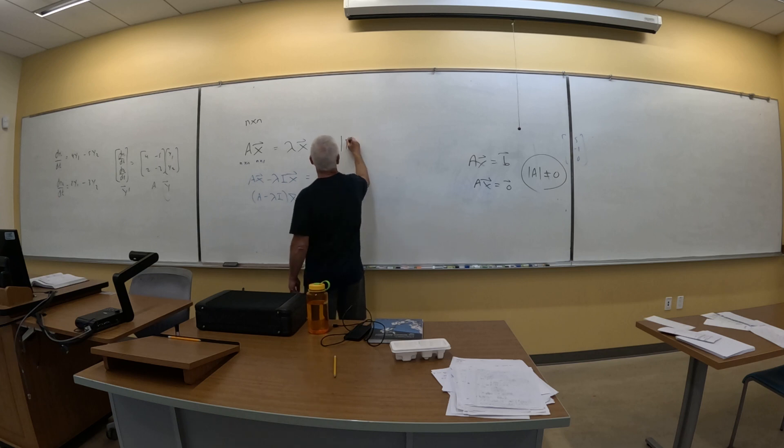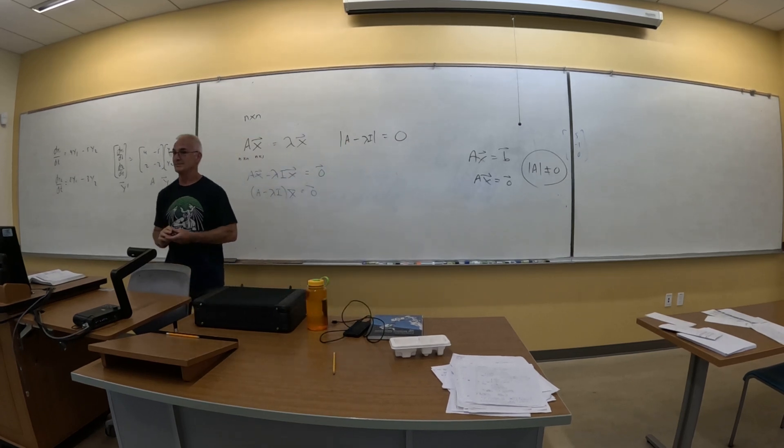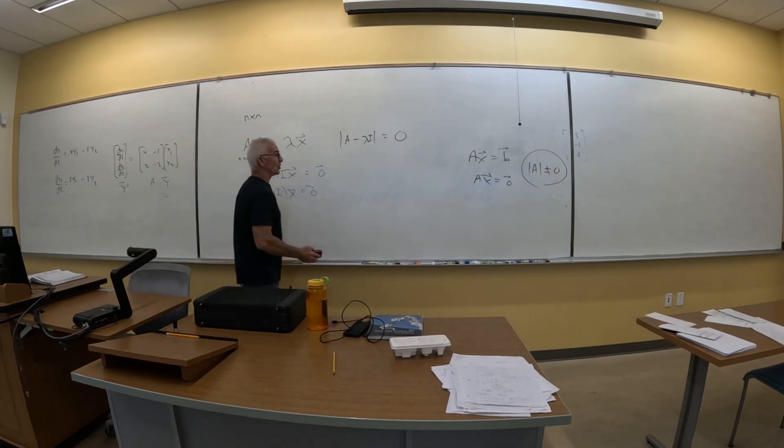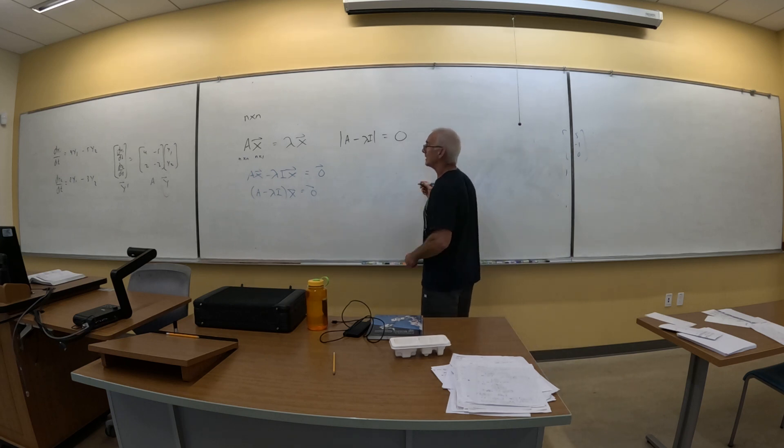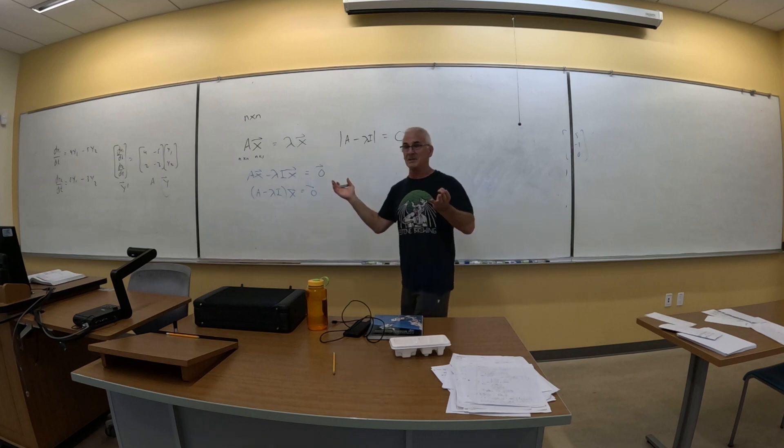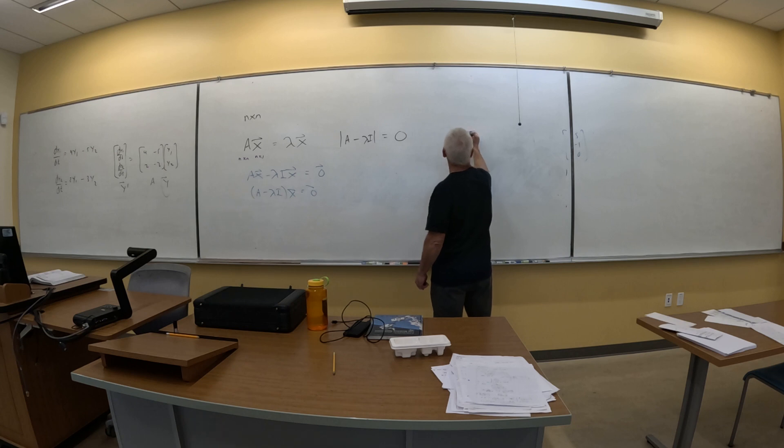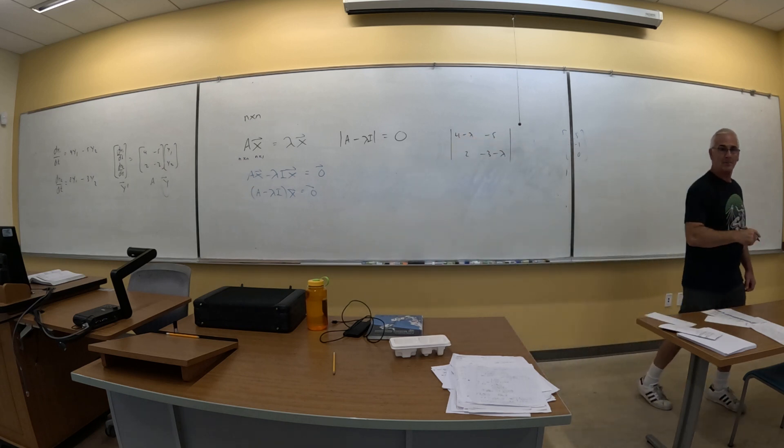So, the only way I can solve this is to say I'm going to assume that the determinant is zero. So, I want the determinant of A minus lambda I, and I'm going to set that equal to zero. Now, what does the determinant of A minus lambda I look like? Well, I'll do it for that problem right there. So, it would be four minus lambda, negative five, two, negative three minus lambda. Everything on the diagonal I'm going to subtract lambda.